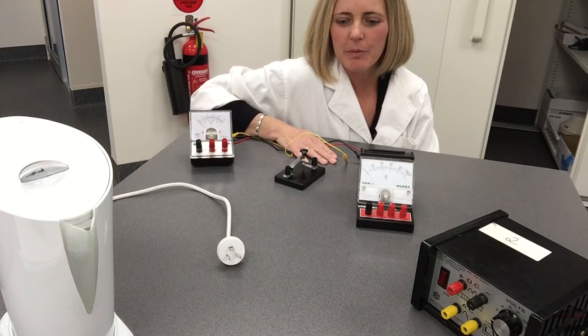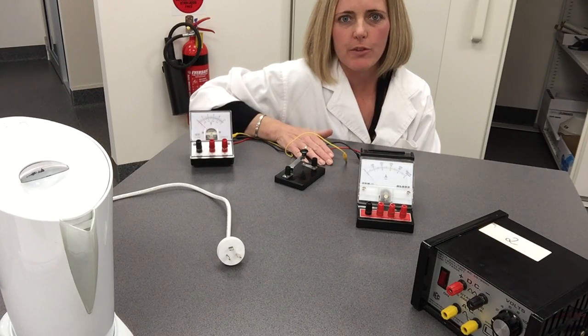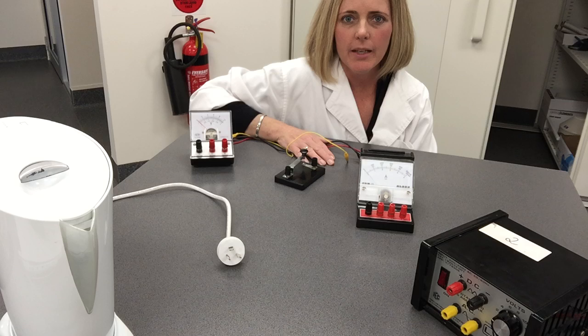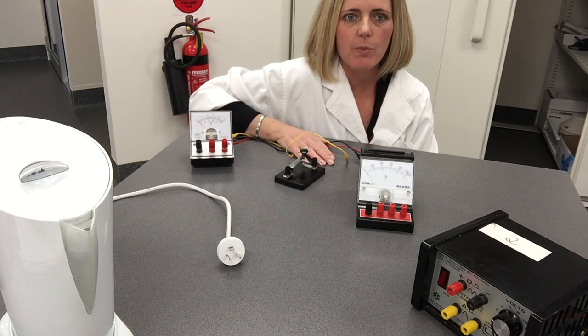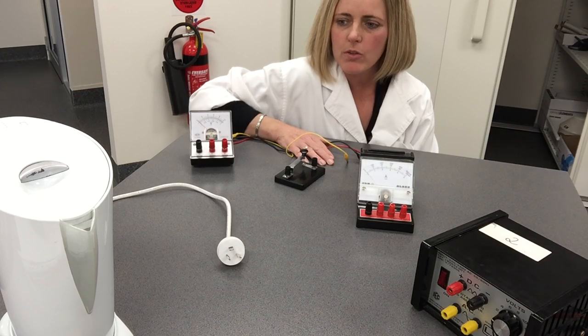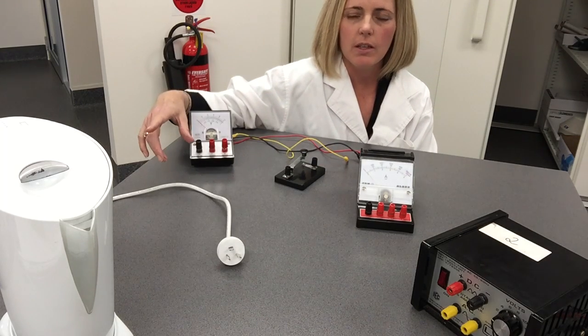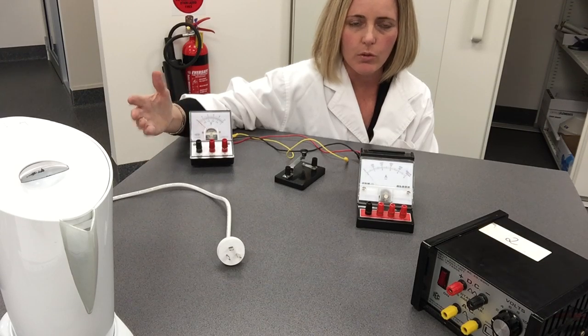Good afternoon girls and bonjour to the French students. This is the third part of your EEI experiment, section three. You're required to find the power rating of your kettle and check it to the actual power rating information that you will get given on your kettle.